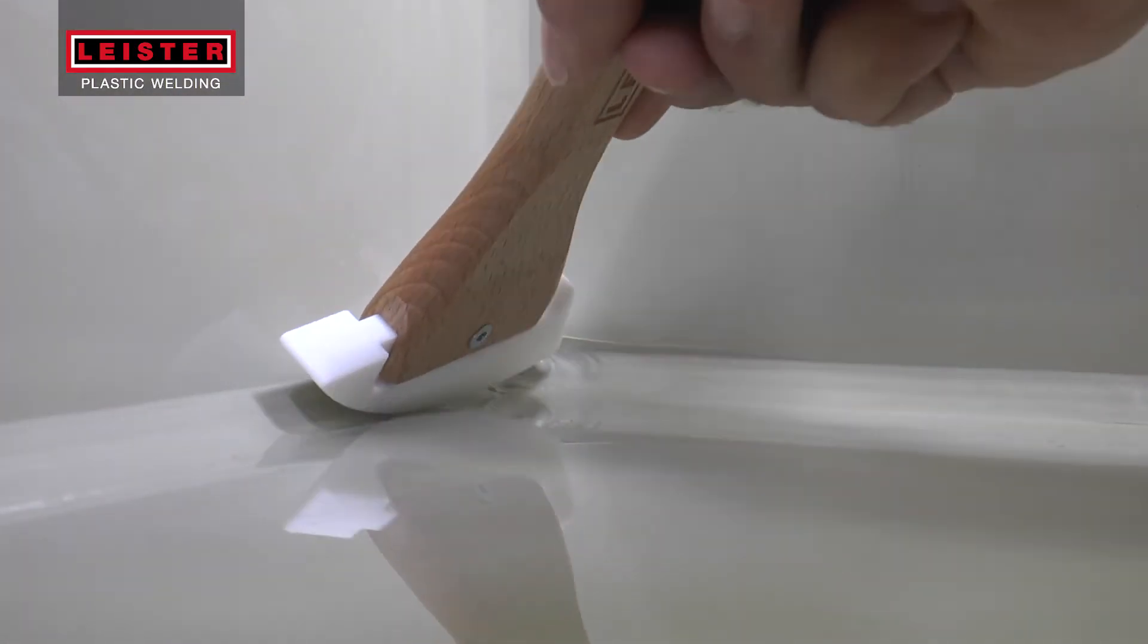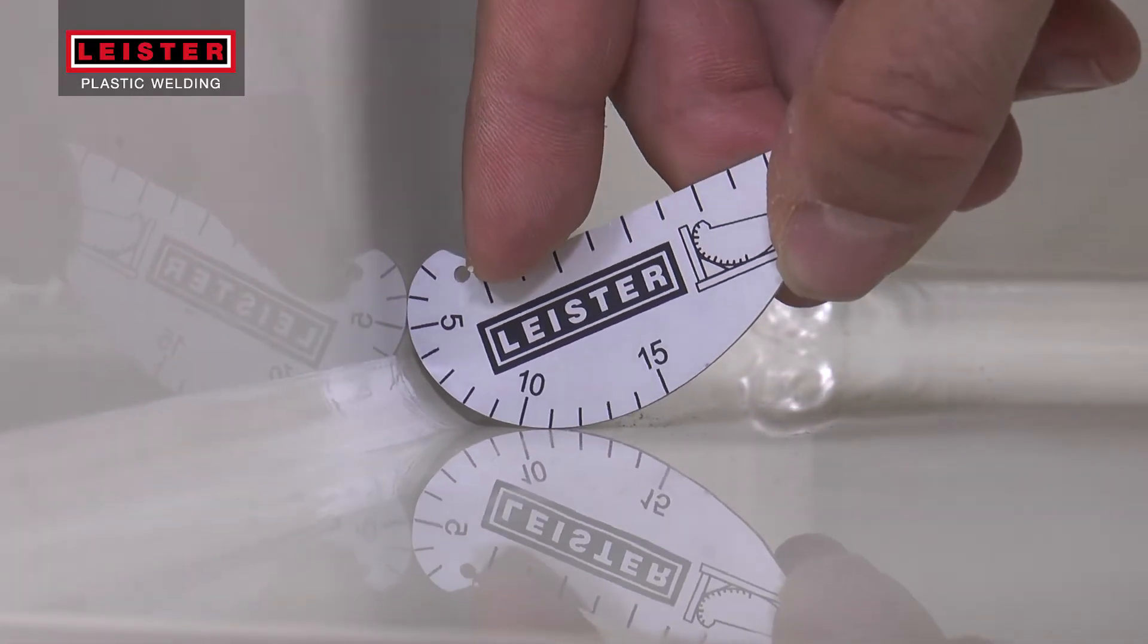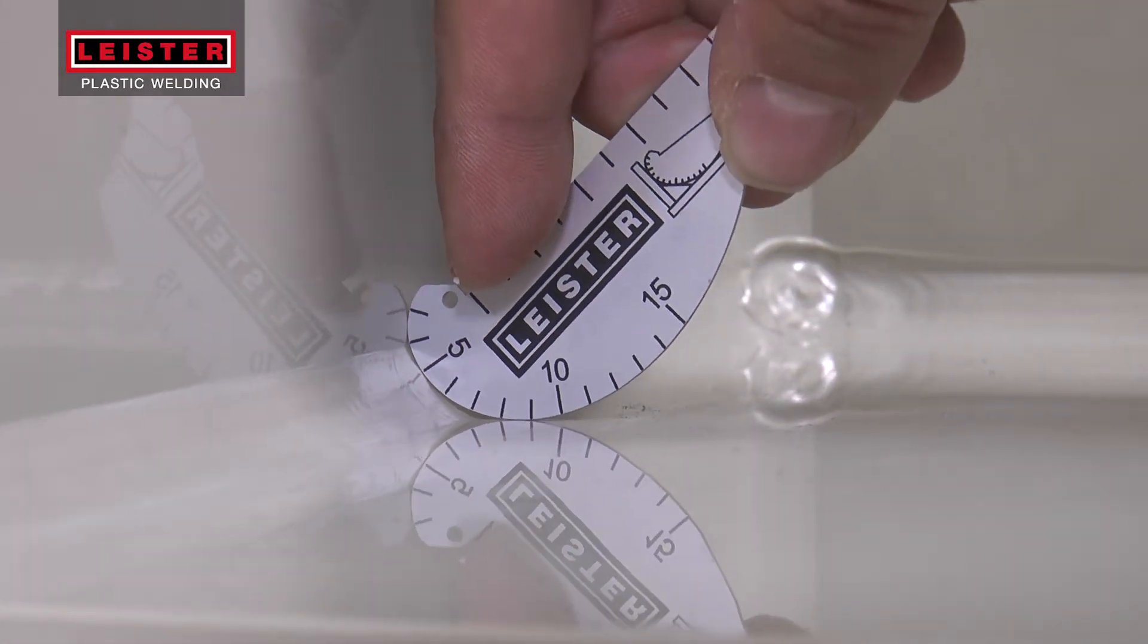The hot plast can be worked manually to provide a smooth professional finish. The weld bead dimensions can easily be checked with a welding gauge.